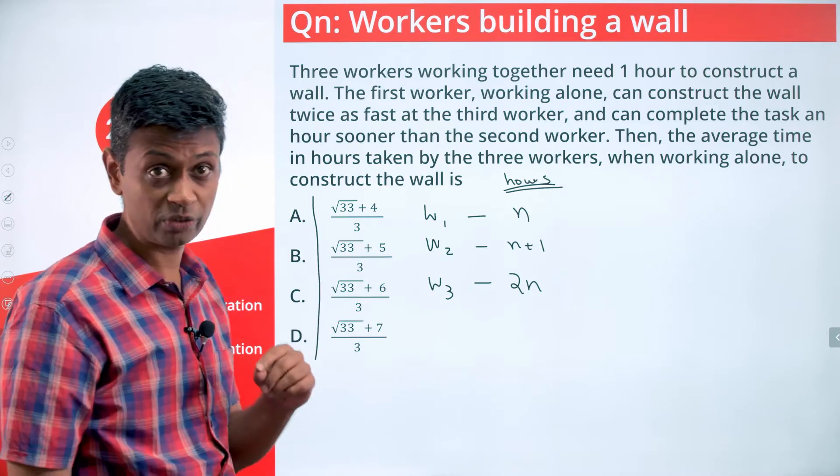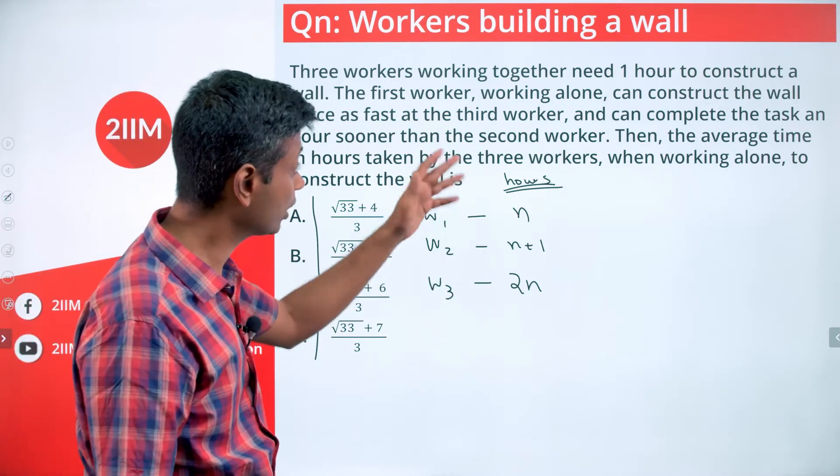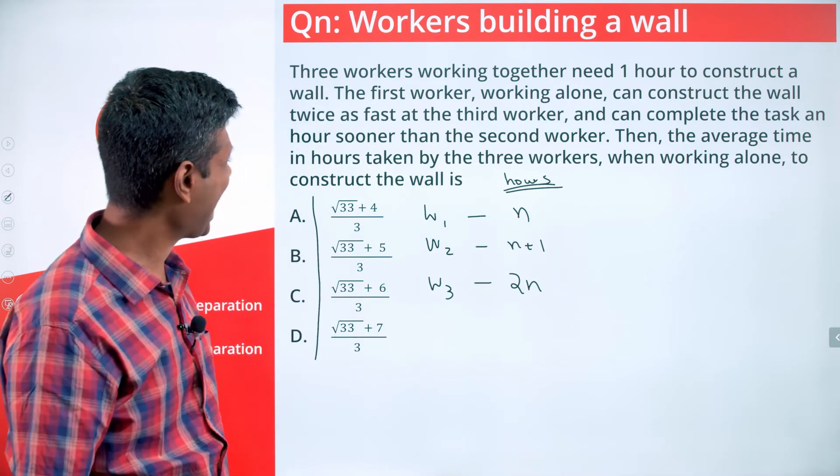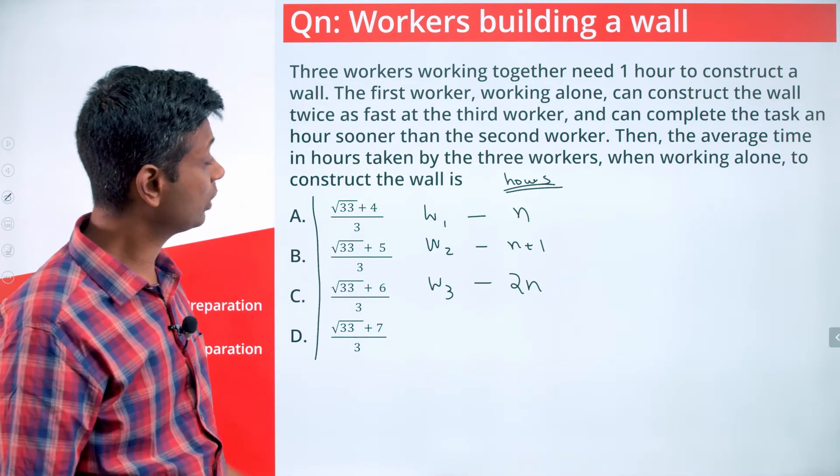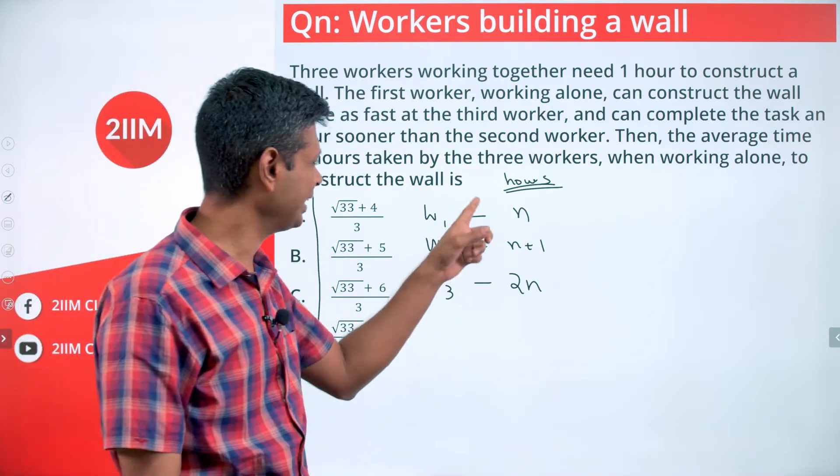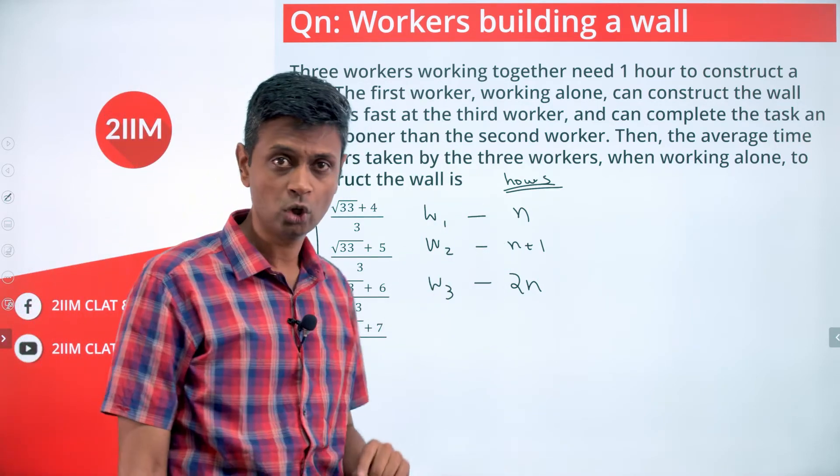Now, we have one more piece of information. When all three of them work together, the entire task can be done in one hour. And then we want to find the average time in hours taken by the three workers when working alone to construct the wall. So we want the average of n, n+1, and 2n.